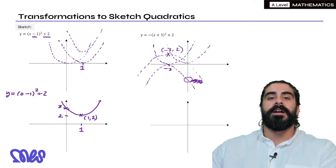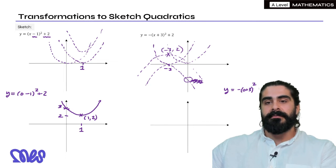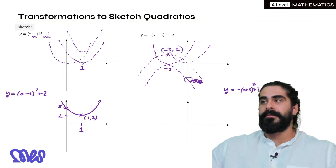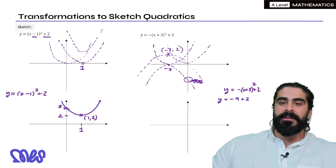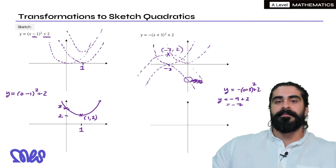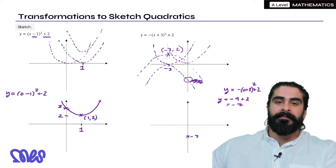But we do want to work out its y intercept. So subbing in x is 0 we get the negative of (0+3)²+2. So we get the negative of 3² which is -9+2. That is -7. So this graph crosses the y-axis at -7. And then it has that turning point at (-3, 2).